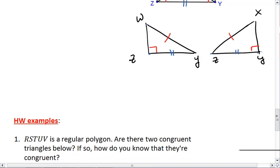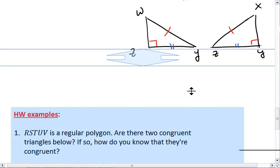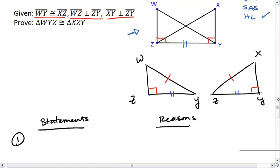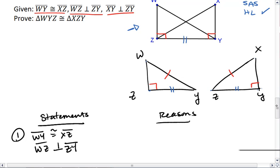Let's now construct the proof. I have statements and reasons. We always start with givens. We're given WY congruent to XZ, WZ perpendicular to ZY, and XY perpendicular to ZY.